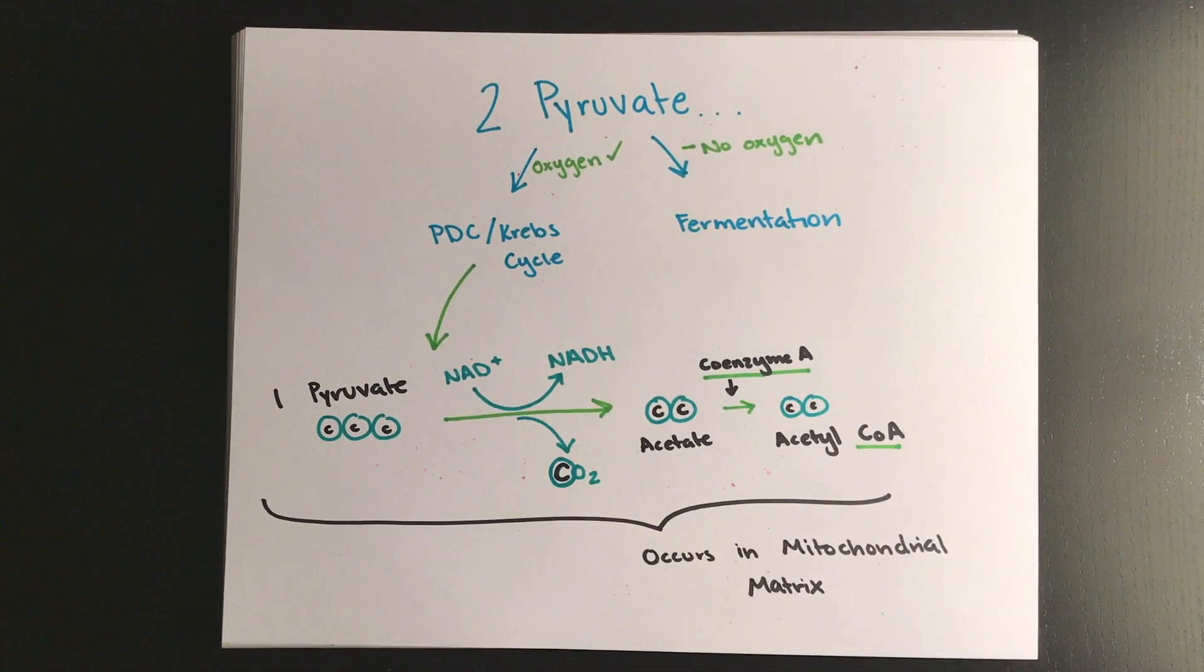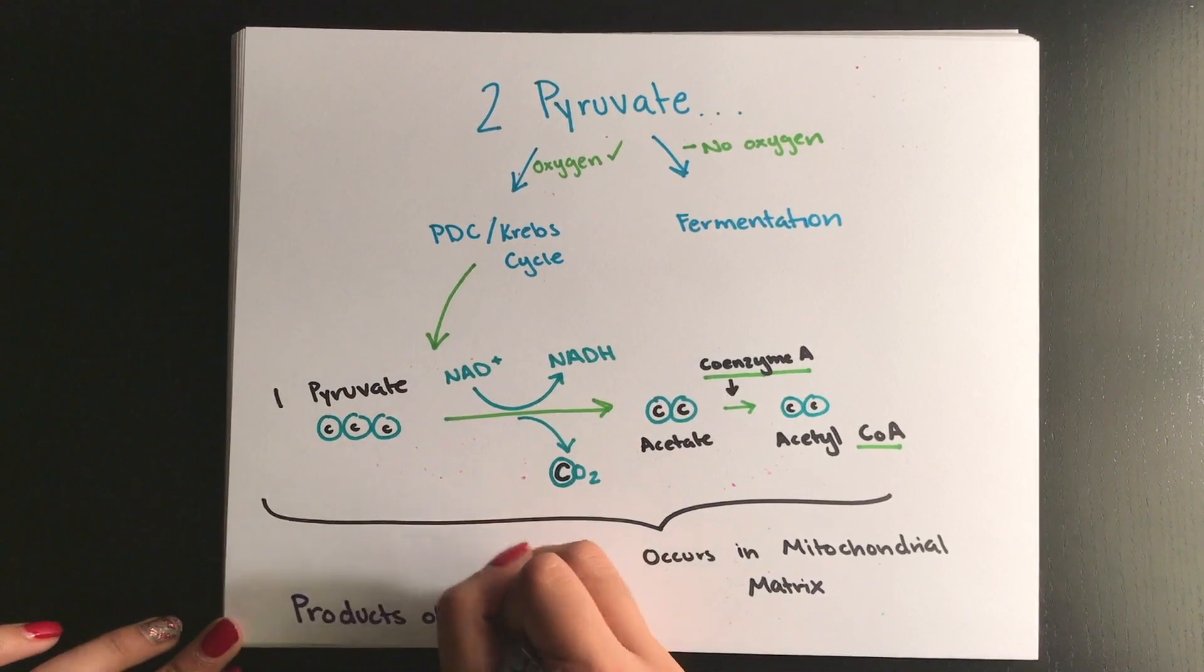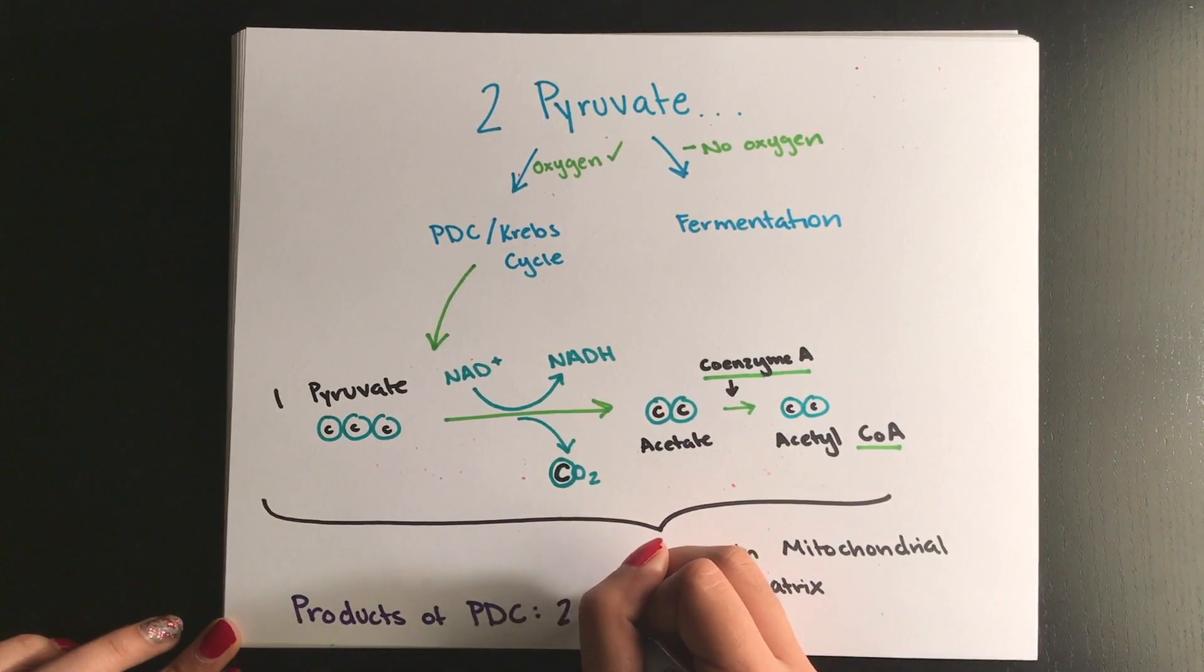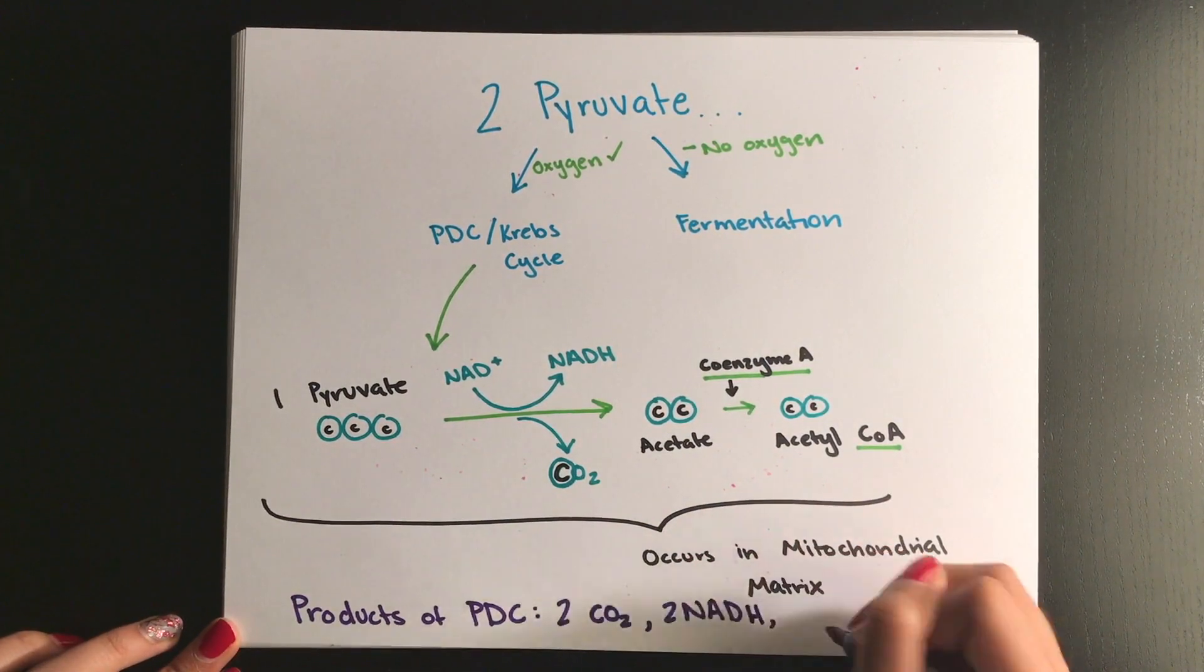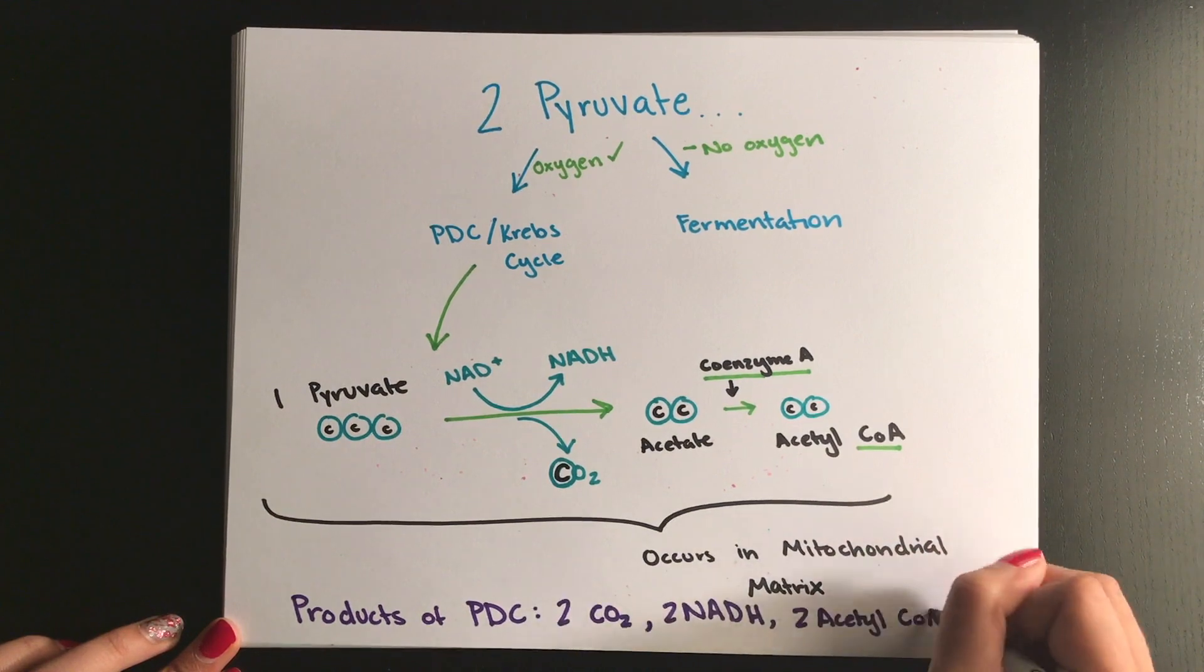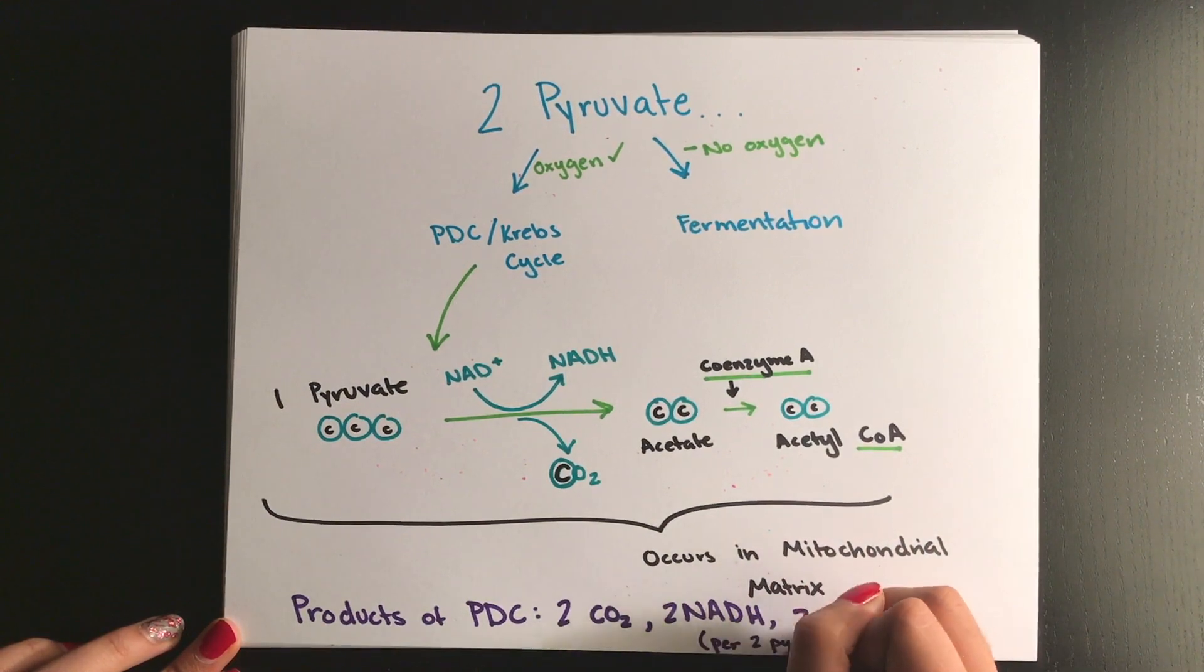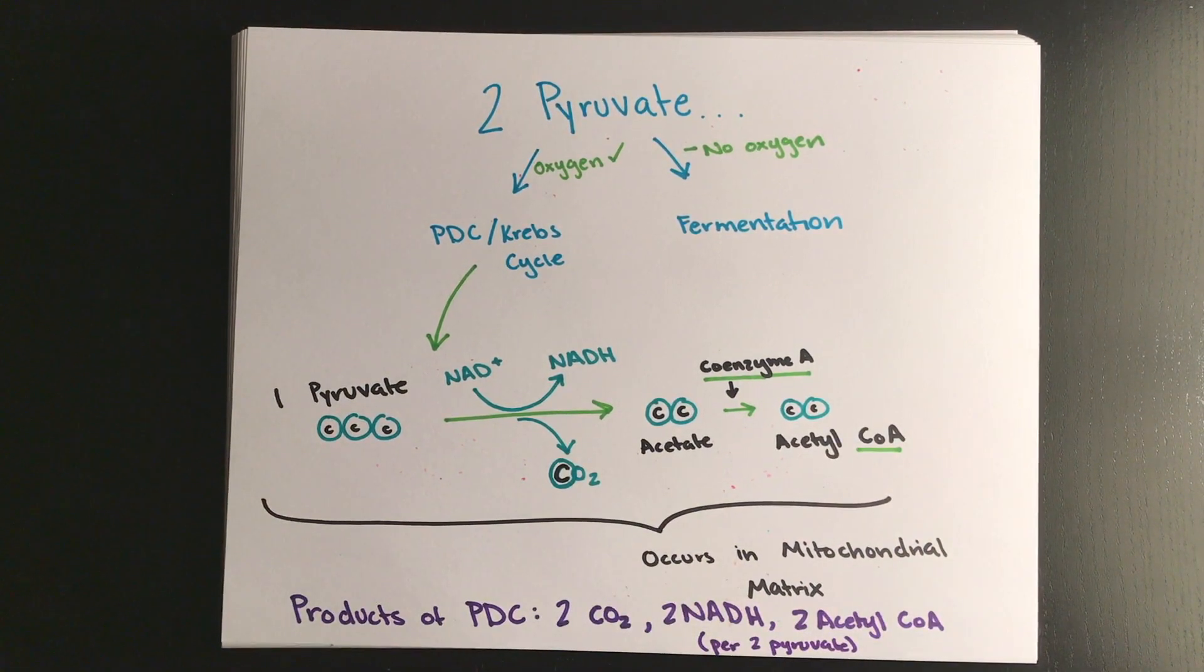Remember that because two pyruvates are produced in glycolysis this cycle for PDC happens twice so the products of one cycle is doubled leaving us with two molecules of carbon dioxide, two molecules of acetyl-CoA, and two molecules of NADH. This step along with the Krebs cycle will occur in the matrix of the mitochondria.